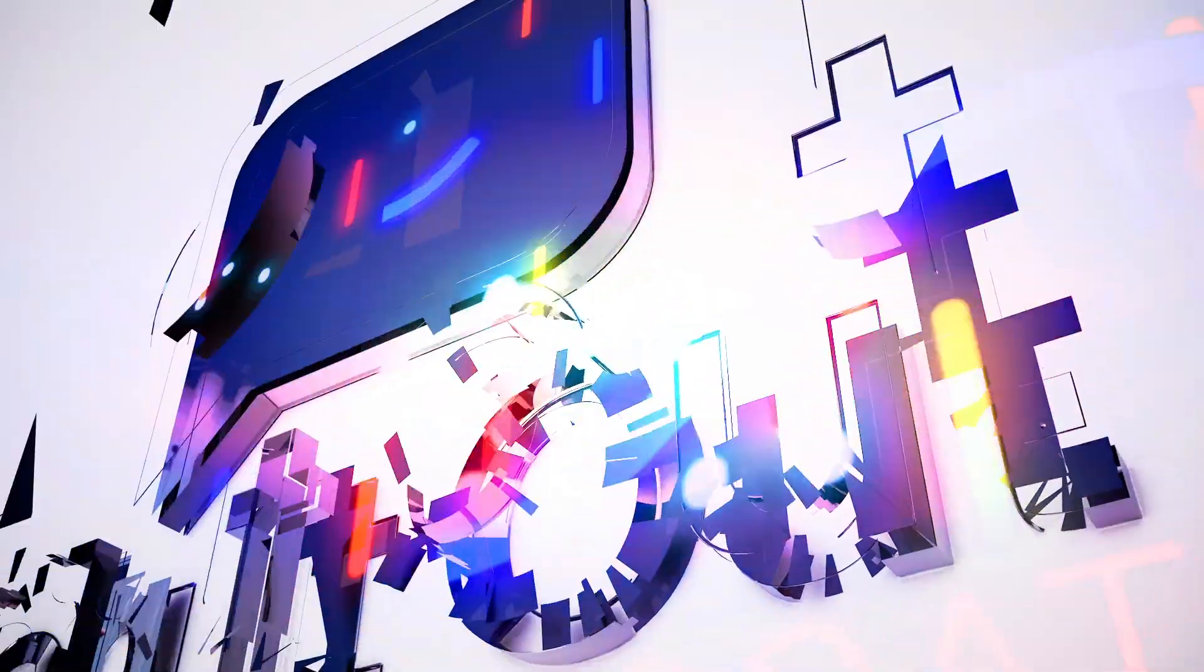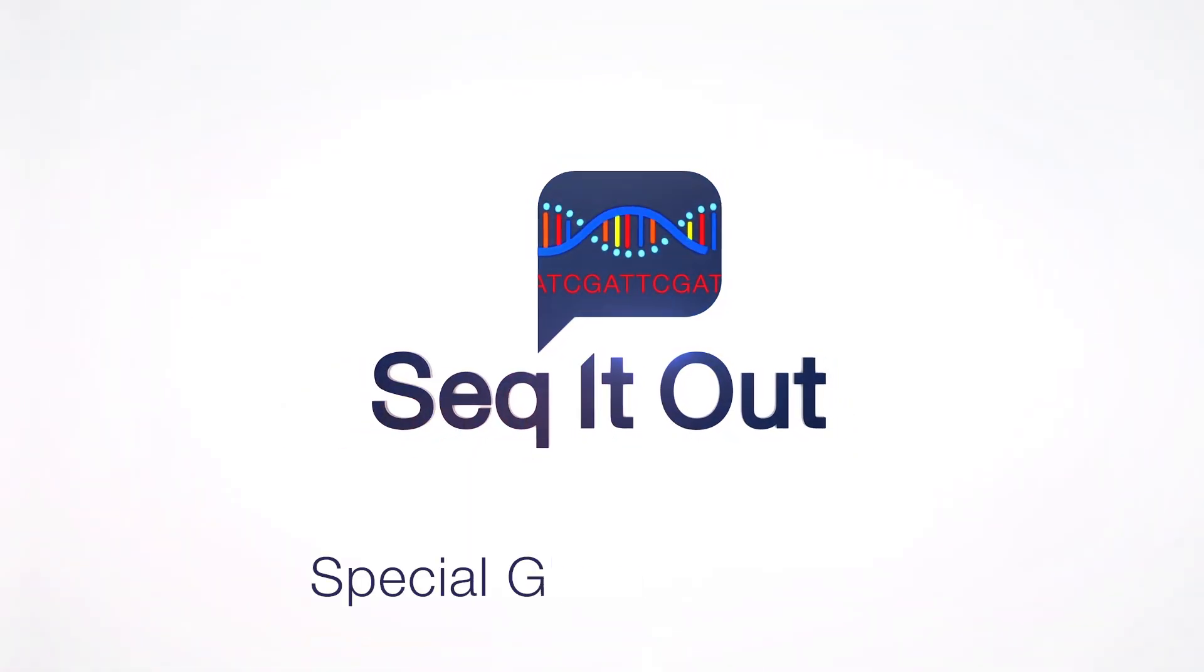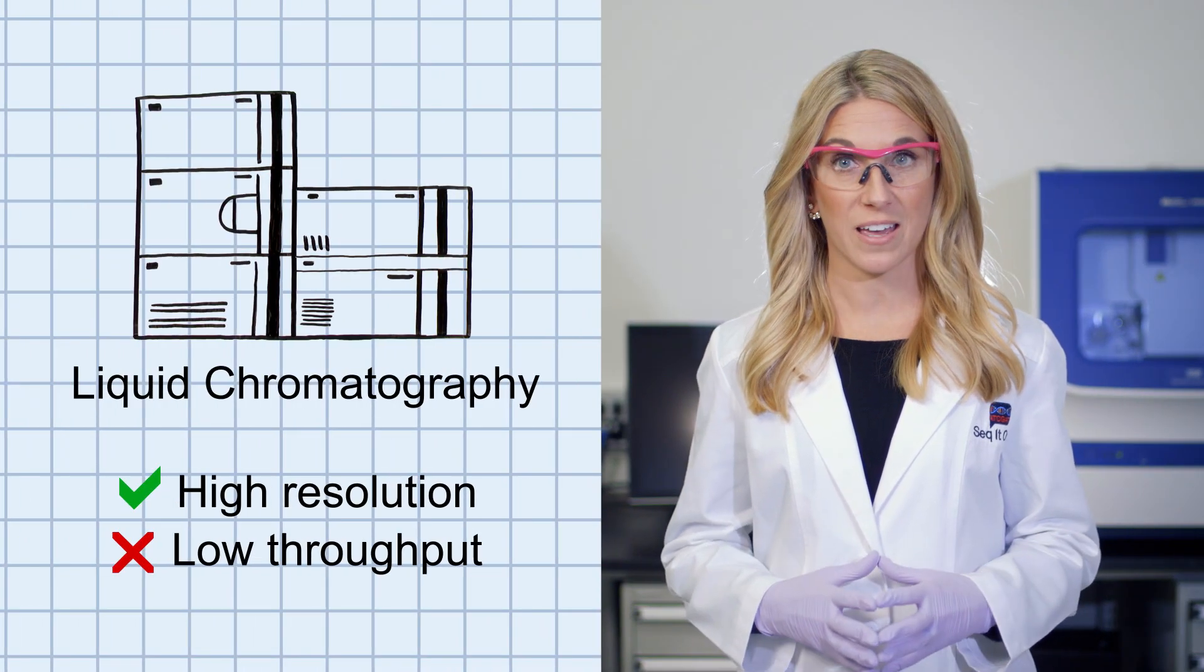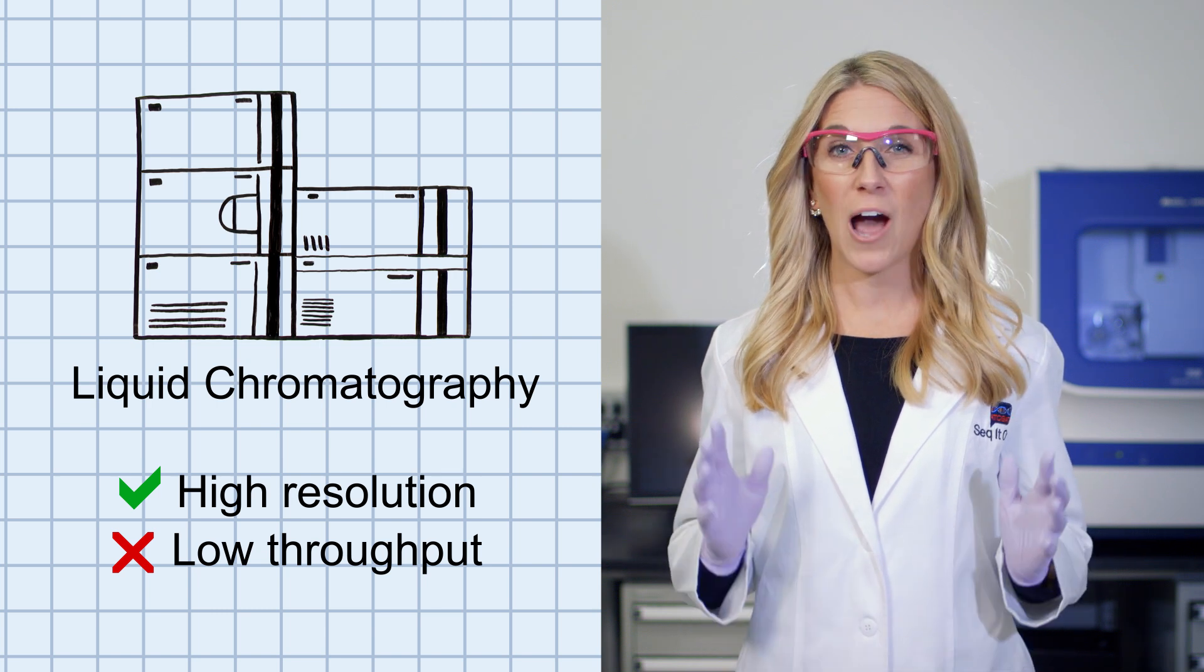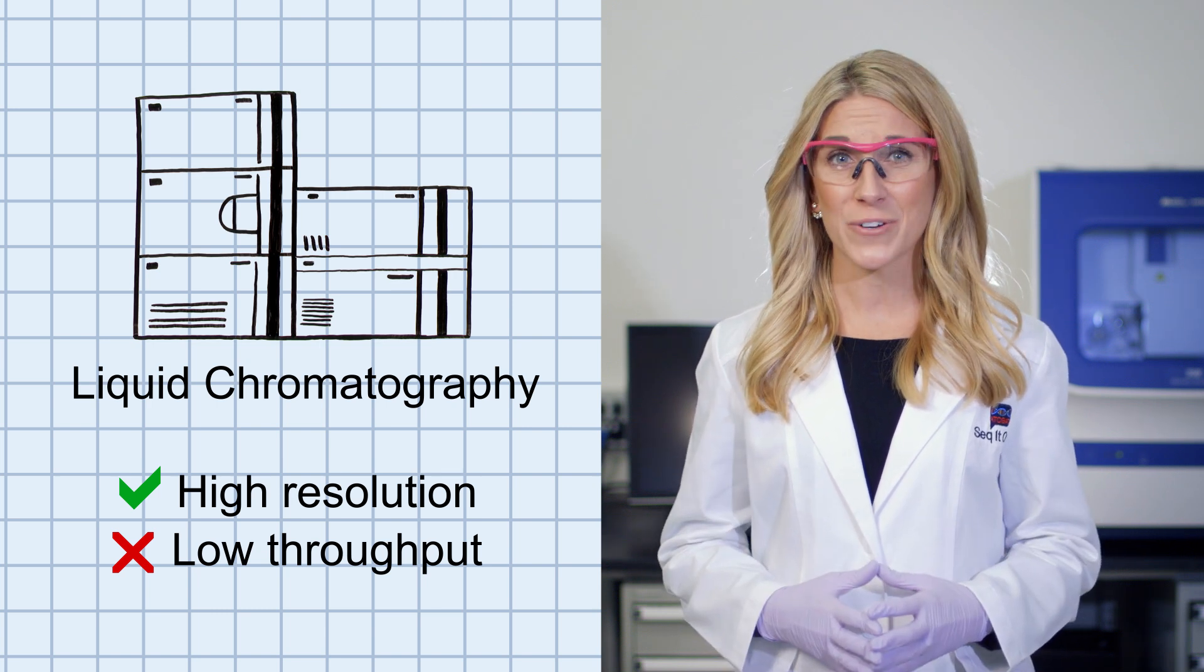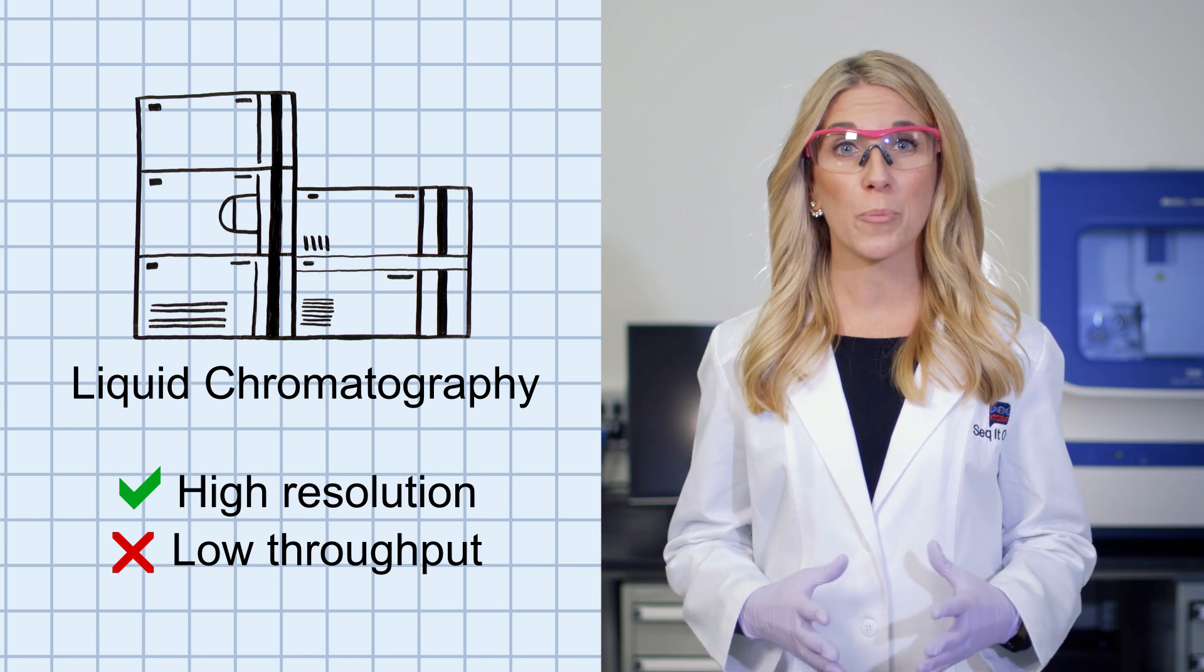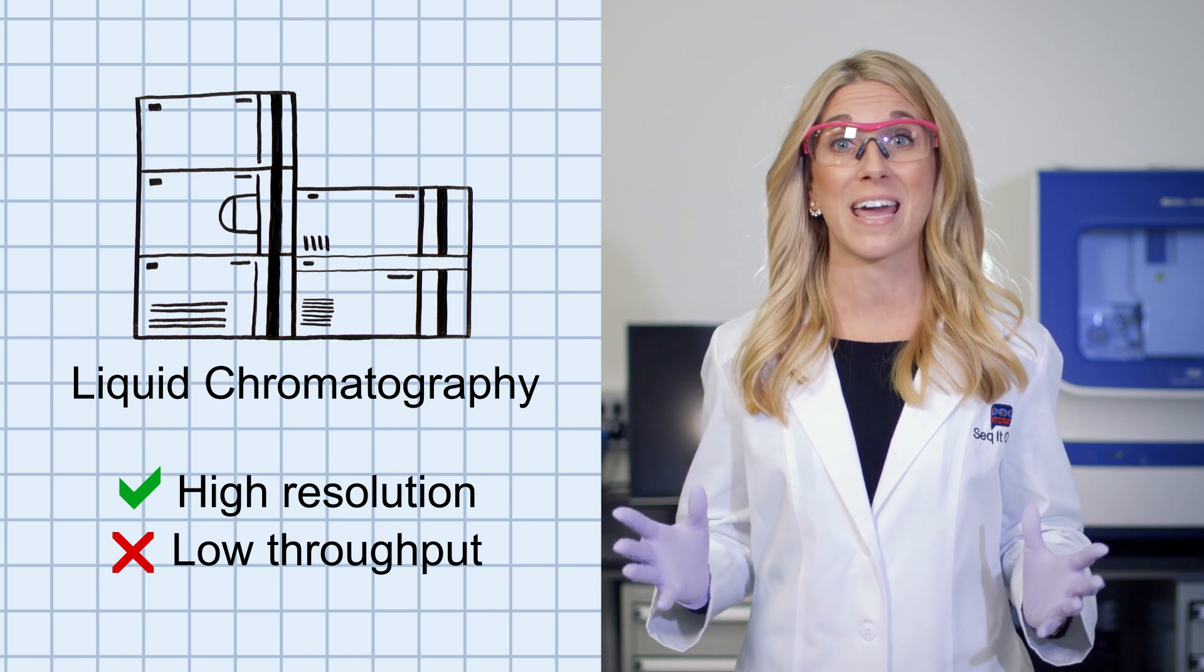While some good methods for glycan analysis have been used routinely over the years, thanks to new methods, we have better solutions available now to analyze glycans. Liquid chromatography is most commonly used to separate and quantify glycans. It provides high resolution of glycan separation and great data. However, to obtain great data for 96 samples, the overall process from sample prep to analysis takes about 2-3 days.